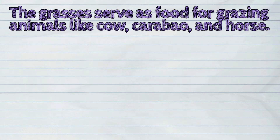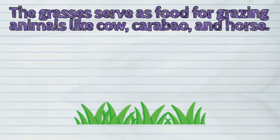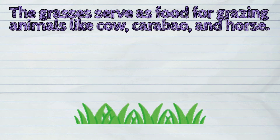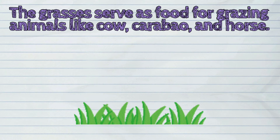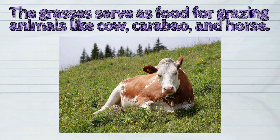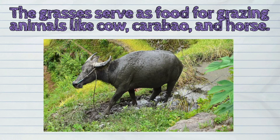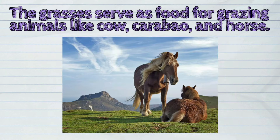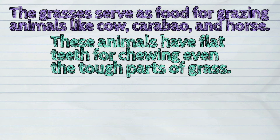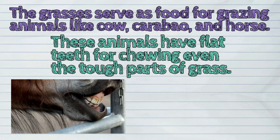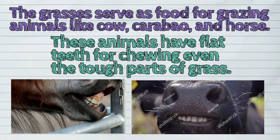The grasses serve as food for grazing animals, like cows, caribou, and horses. These animals have flat teeth for chewing even the tough parts of grass.